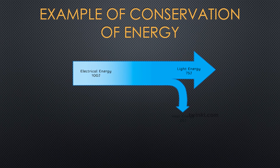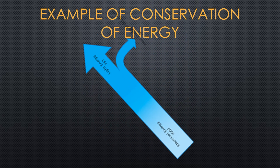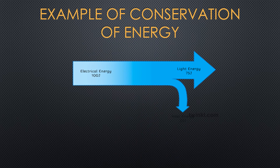Here we have a practical example of conservation of energy. A light bulb starts off with electrical energy at 100 joules. That energy is then converted into light energy at 75 joules. Now we know that what is put in at the beginning should equal the output at the end, but here we have 25 joules unaccounted for — so what happened to the rest of the energy? It simply got lost as heat energy.